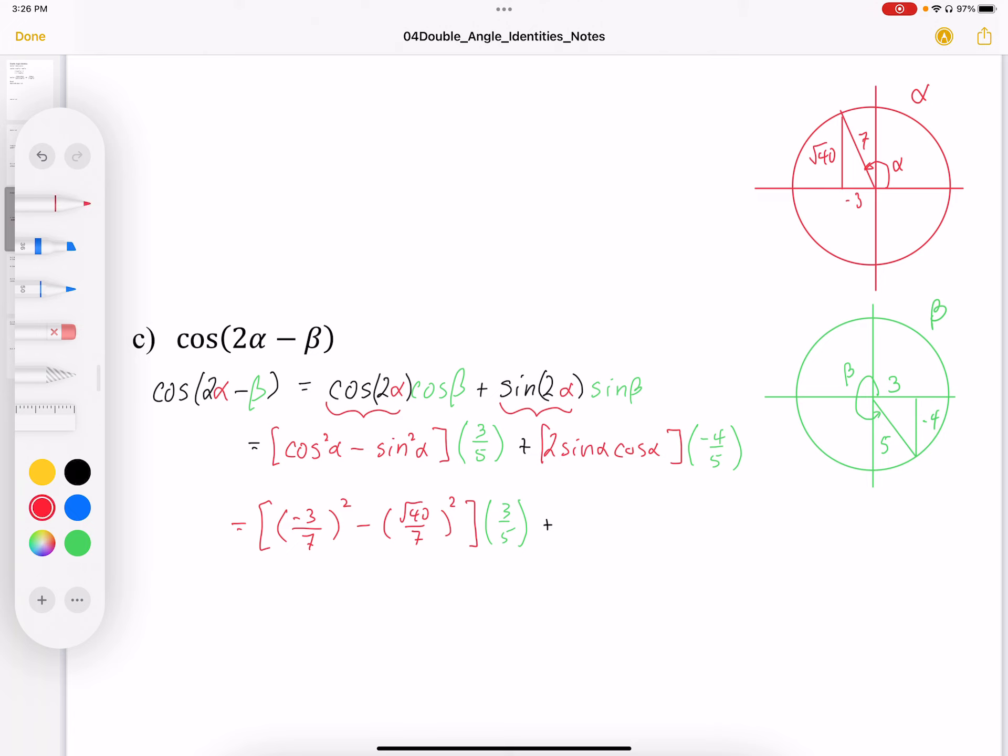I'm going to then replace the alpha parts of this. So 2 times sine alpha. I take a look at my alpha. Sine alpha was root 40 over 7. Cosine is negative 3 over 7.